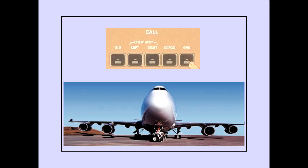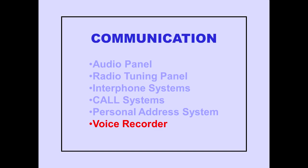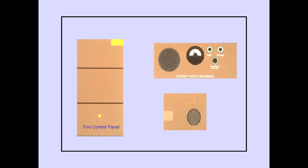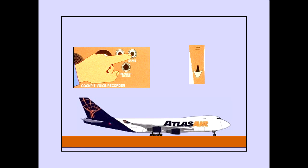Pushing the ground call switch sounds a three-second horn in the nose wheel well. Finally, let's look at the cockpit voice recorder. The cockpit voice recorder panel is located on the overhead maintenance panel, and the flight deck area microphone is located on the overhead panel. Cockpit voice recorder tape can be erased by pressing the erase button, if the airplane is on the ground with the parking brake set.